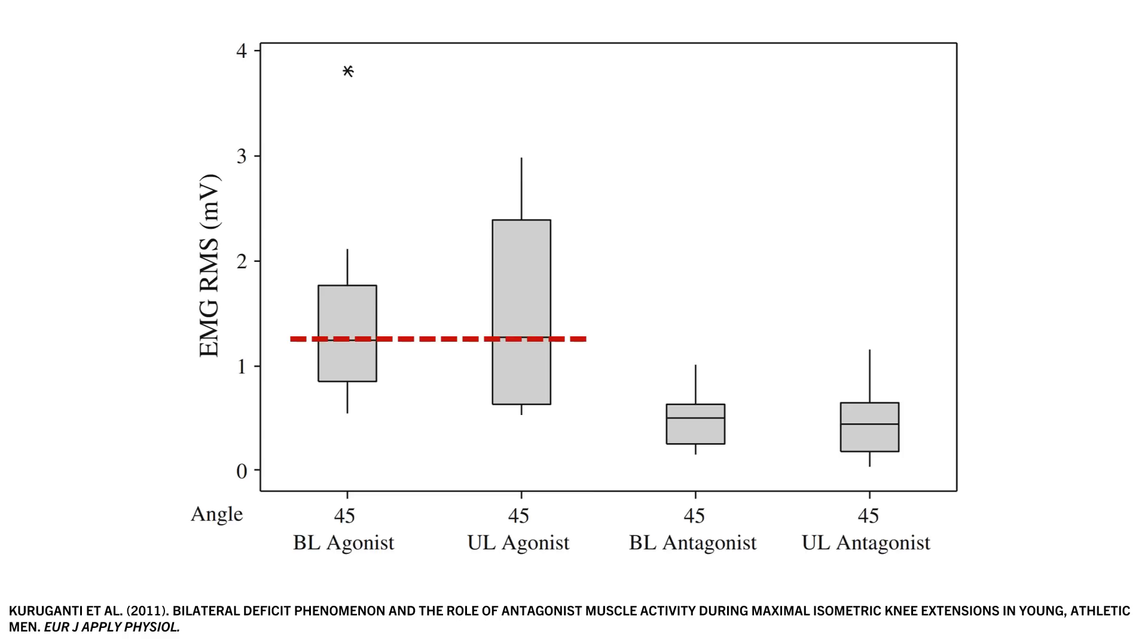However when comparing muscle activity of the quadriceps it was almost exactly the same on average between conditions despite higher forces being produced unilaterally. So once again it is difficult to extrapolate these findings into actual muscle growth outcomes, but hypothetically it is possible that single limb training could allow a slightly superior stimulus due to the ability to produce higher forces.